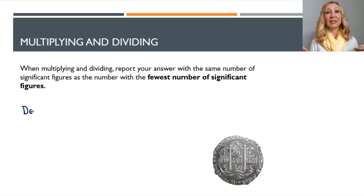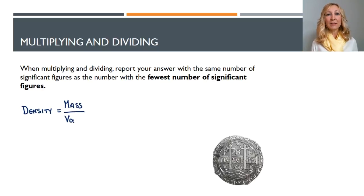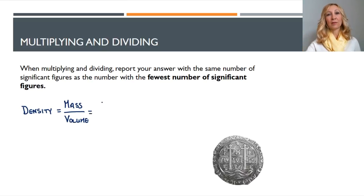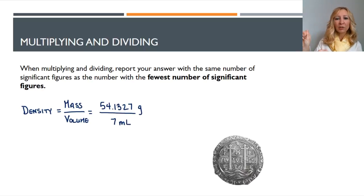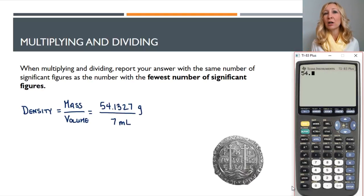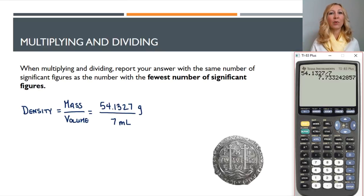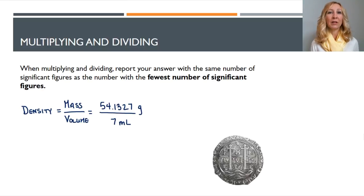Say we're measuring the density of a coin. Density is mass divided by volume. We measure the mass of this coin on a very precise analytical balance and get 54.1327 grams — a super precise instrument, probably expensive and kept in a separate area of the lab. But when measuring the volume, we just throw it in a graduated cylinder and notice the water level rises by about 7 milliliters. So we say the volume is 7 milliliters. We did not measure this very precisely — there is only one significant figure in the volume measurement.